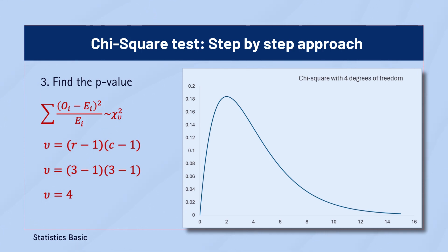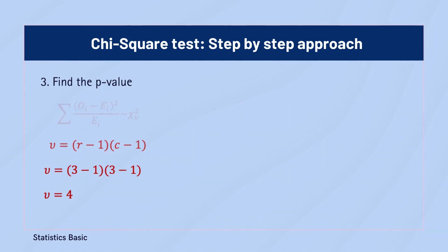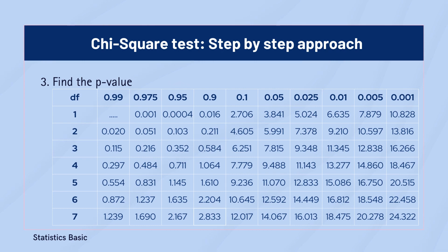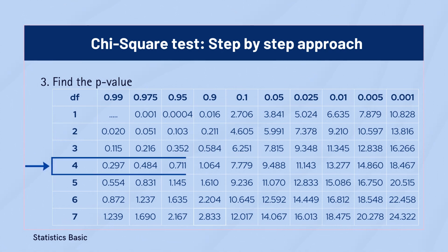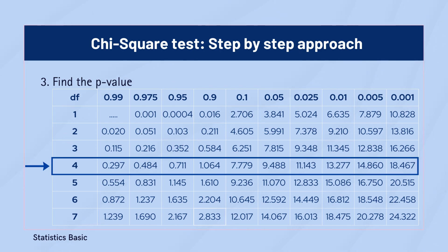The degrees of freedom value is 4. You can find the p-value associated with a chi-square statistic of 17.60 by looking up the row for degrees of freedom value of 4 in a chi-square distribution table. The table will show you the range of p-values within which your chi-square statistic falls.